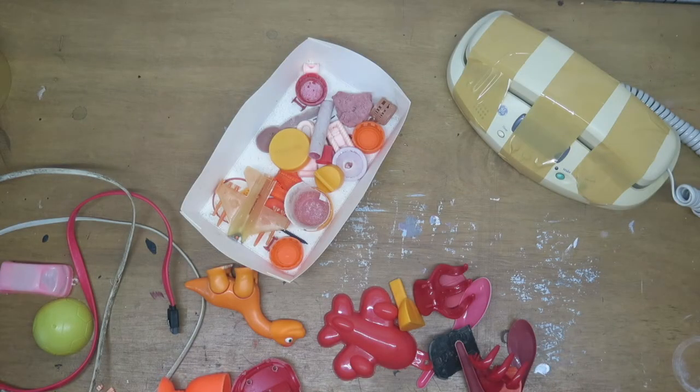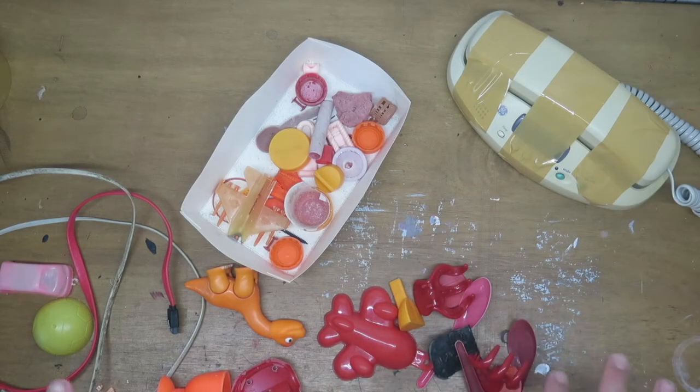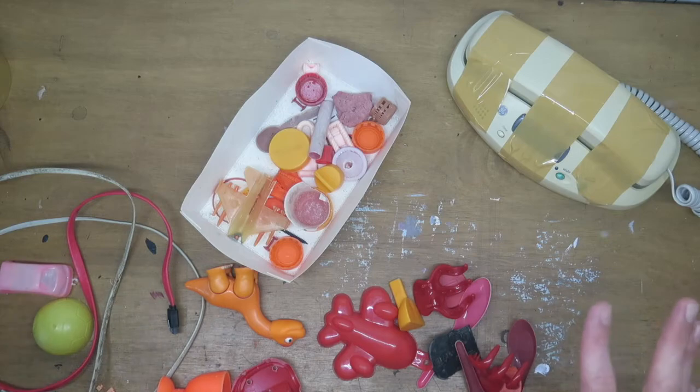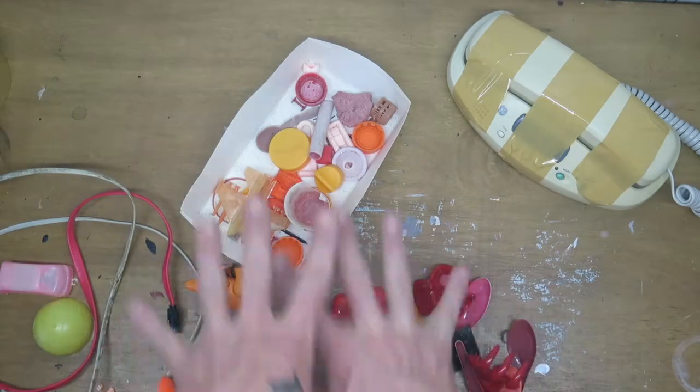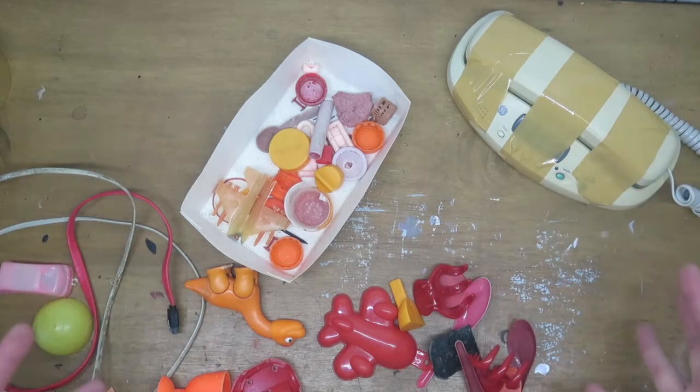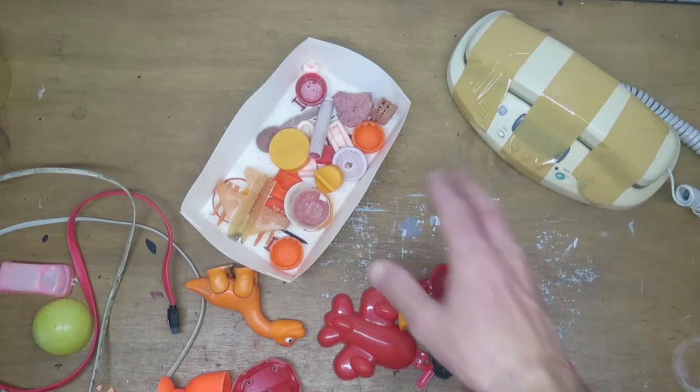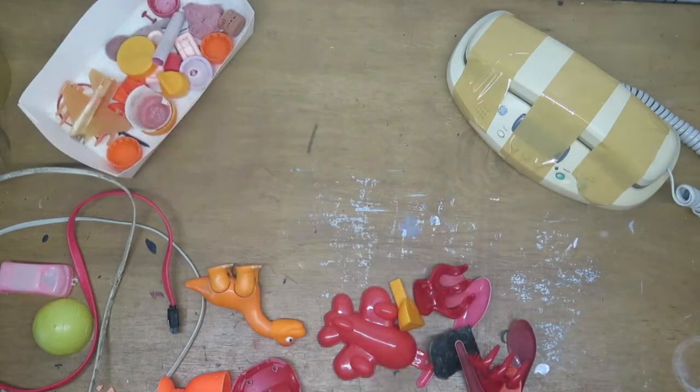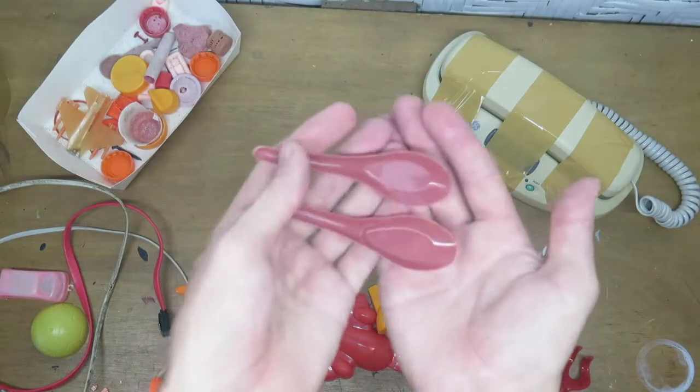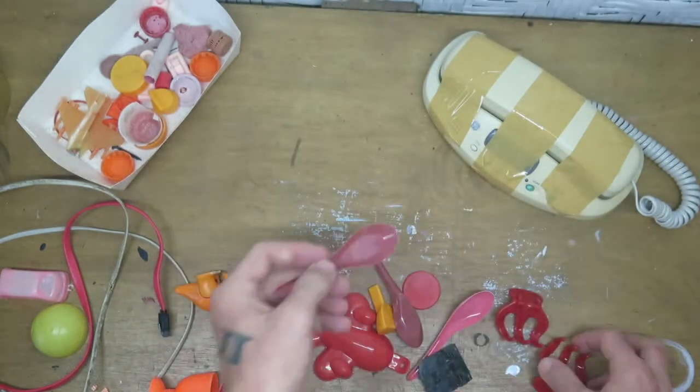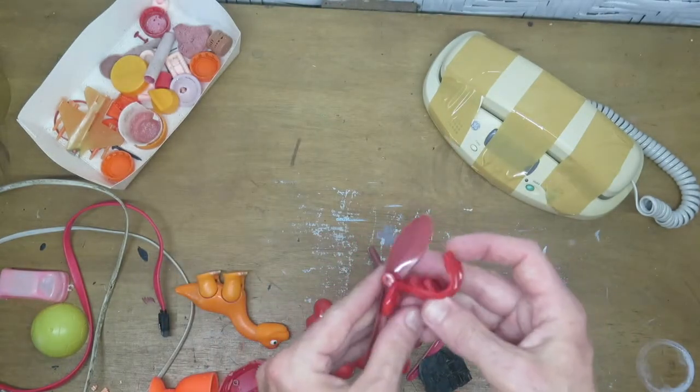So when I collect bits and pieces from the beach, I break them into color categories. So I've gotten out my orange, red, pink sort of colored box of plastics to try and form a lobster shape. I have this hair clip and also these takeaway spoons.